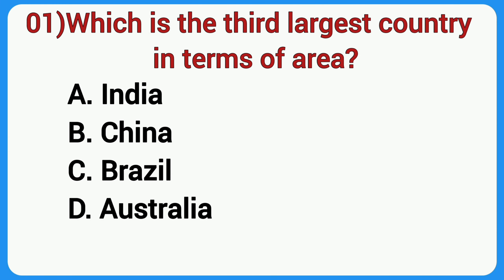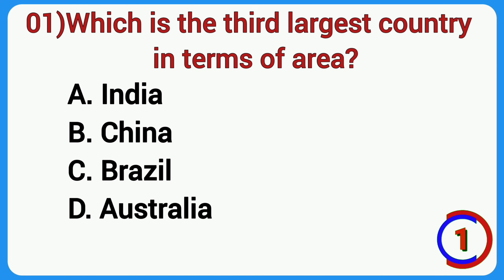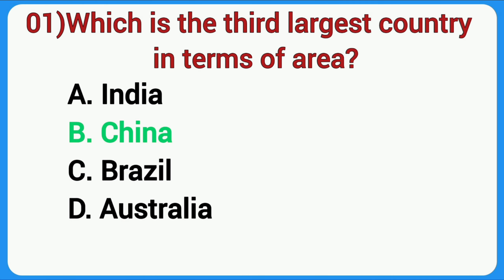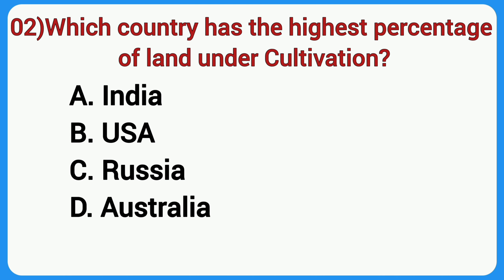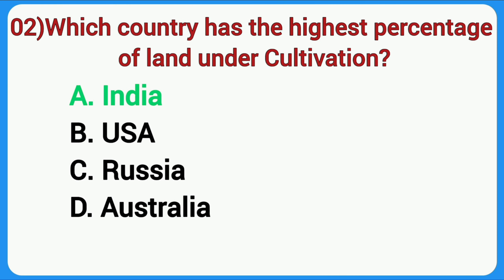First question: which is the third largest country in terms of area? Answer is China. Which country has the highest percentage of land under cultivation? Answer is India.